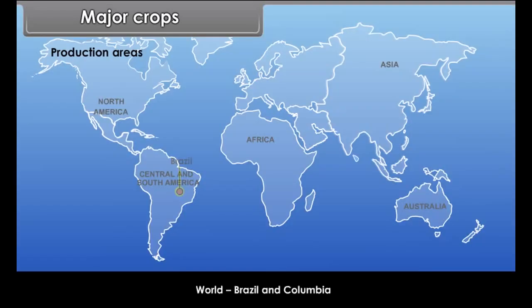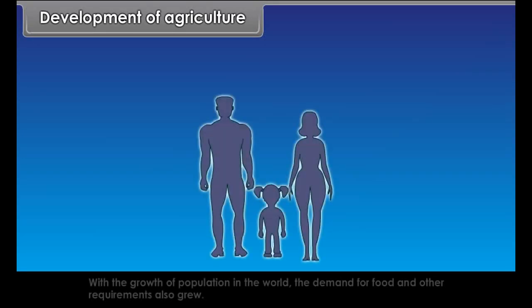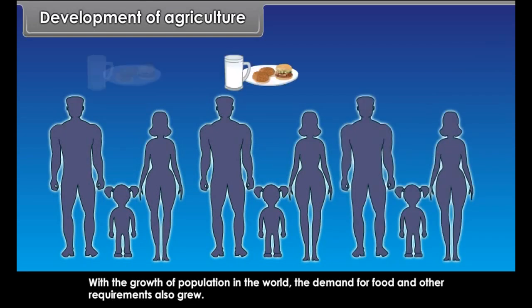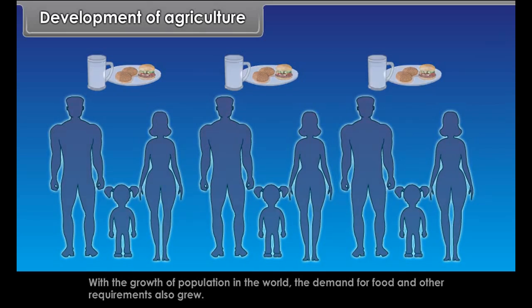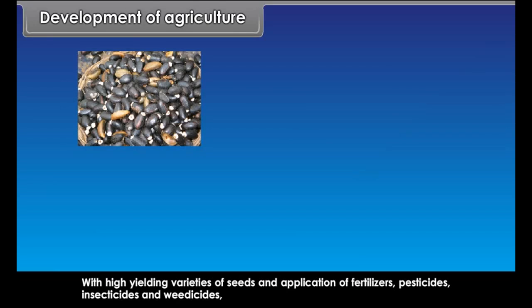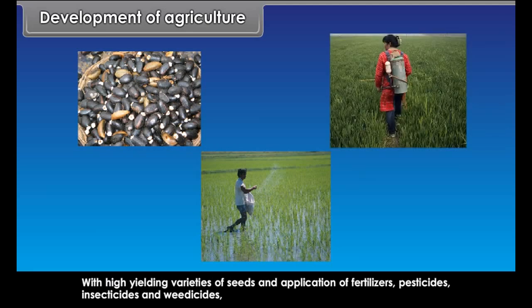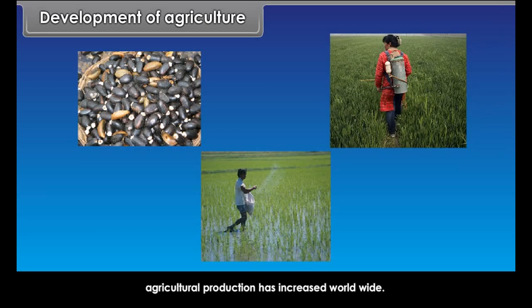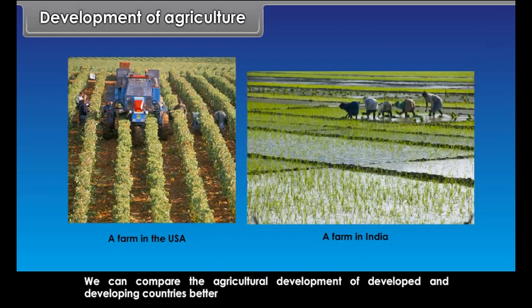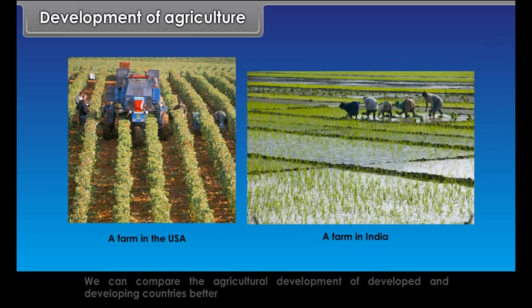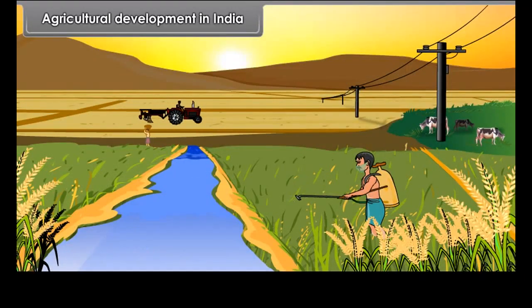With the growth of population in the world, the demand for food and other requirements also grew. With high yielding varieties of seeds and application of fertilizers, pesticides, insecticides and weedicides, agricultural production has increased worldwide. We can compare the agricultural development of developed and developing countries with the help of two case studies — one from the USA and the other from India.